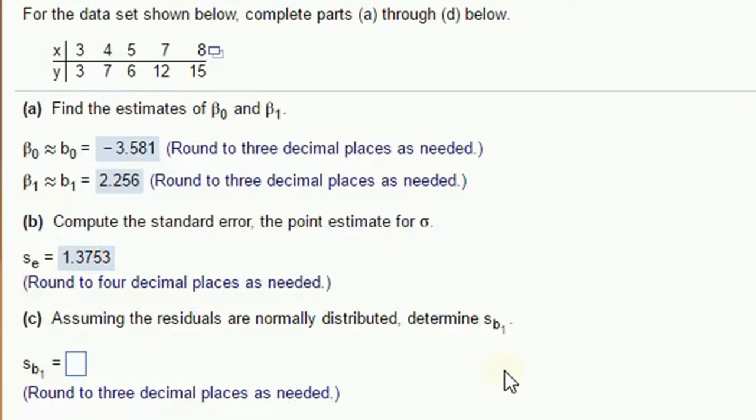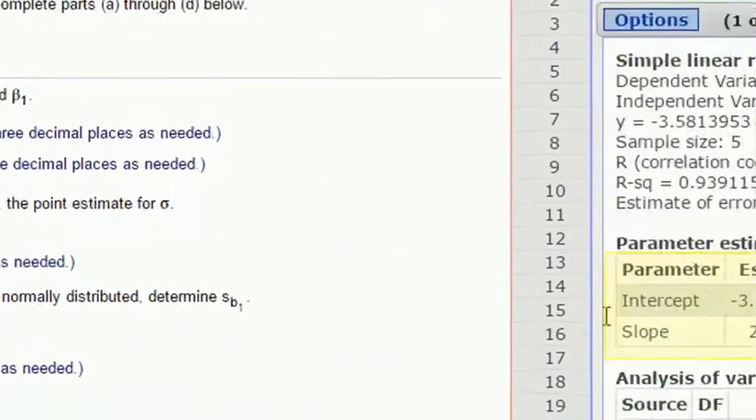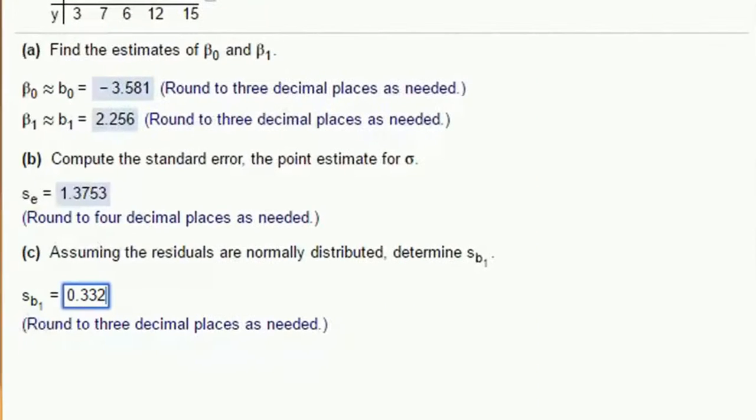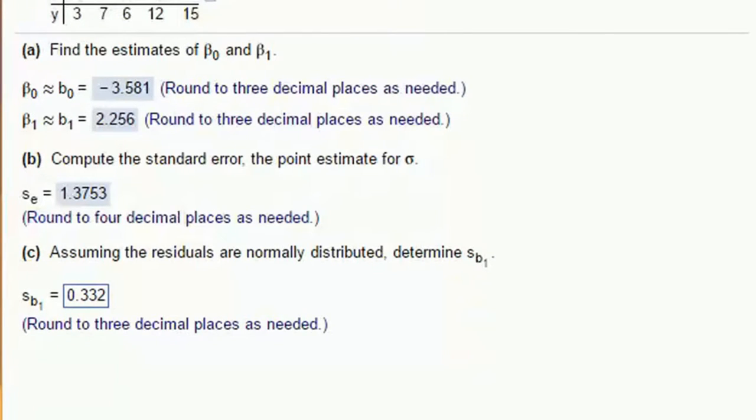The standard error is going to be also given in our output. The standard error is an estimate for the standard deviation of the error term. If our model was perfect, we wouldn't have any difference between our line of best fit and the actual data points. But there is some sort of error. It could be measuring error. It could be other factors that aren't in our model. Whatever it is, we can estimate the standard deviation of that error. And that is the error standard deviation, standard error. That's what it's called, 1.3753. I'm just going to copy it right over to my answers.